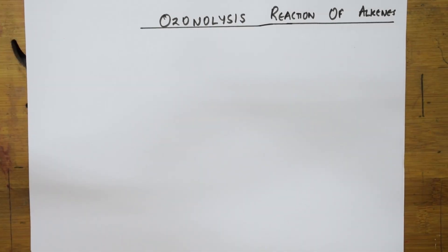Welcome students to one more session of your hydrocarbons chapter. We have already completed different types of reactions of alkenes. We have studied the addition reactions, the allylic substitution reactions, then combustion reactions and oxidation reactions.